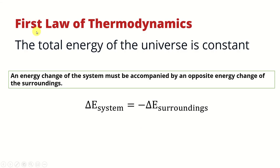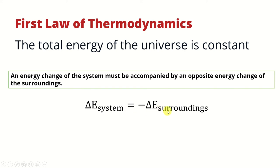The law of conservation of energy is also referred to as the first law of thermodynamics. It states that the total energy of the universe is constant. In terms of system and surroundings, the energy change of the system must be accompanied by an opposite energy change of the surroundings. The change of energy of the system equals the change of energy of the surroundings but in the opposite direction.